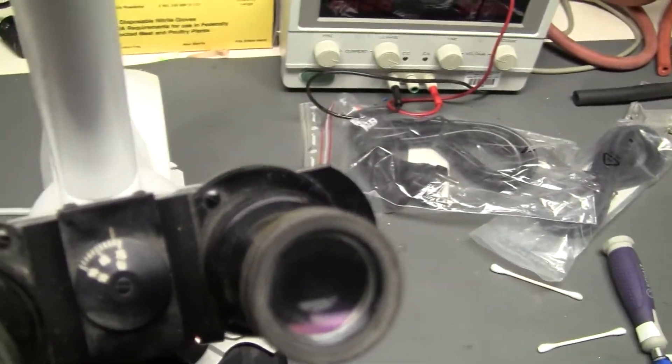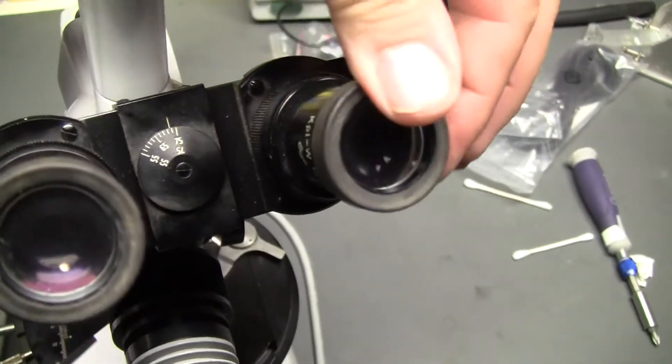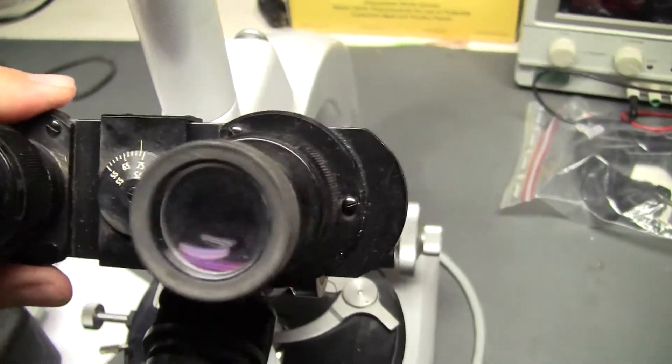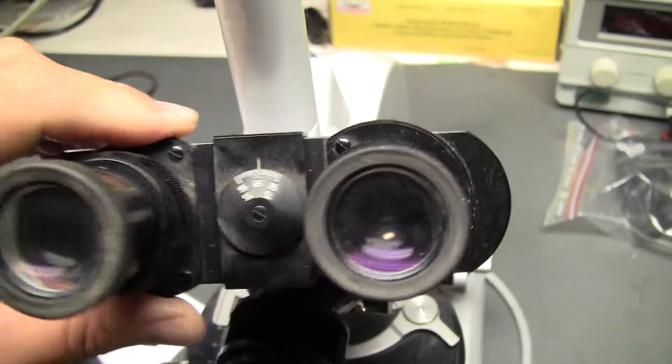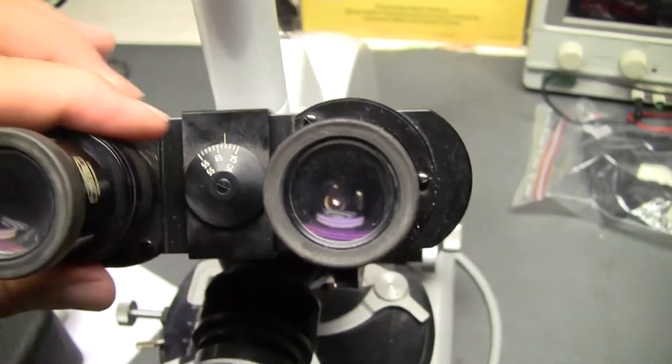Two objectives up top. That's a 10x and this is also a 10x. These pieces will move backwards and forwards, and they'll also spin out for focal length.